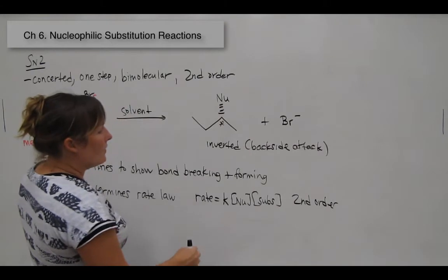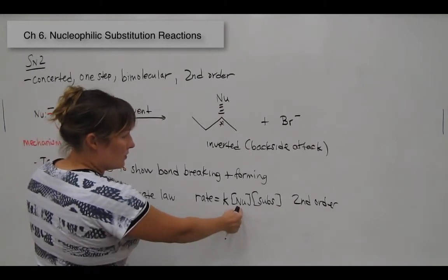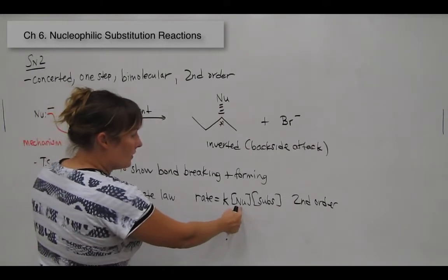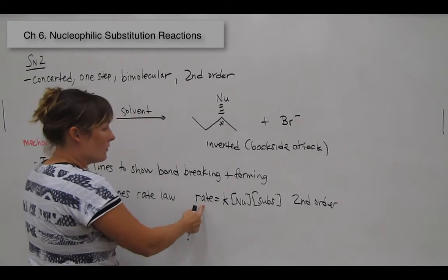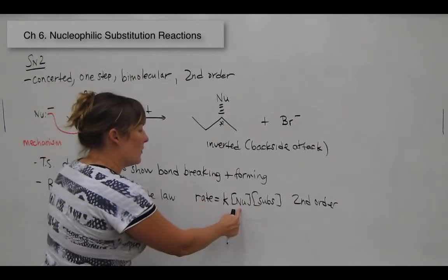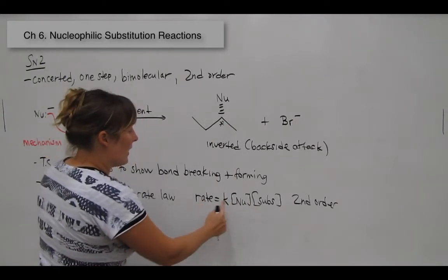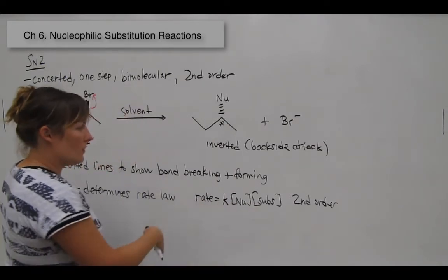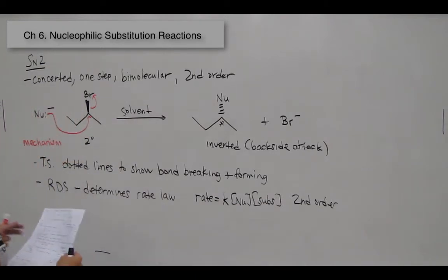This means that if you double the concentration of the nucleophile, you will double the rate. If you triple the concentration of the nucleophile, you will triple the rate, and so on.